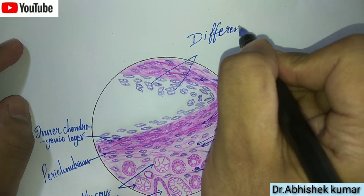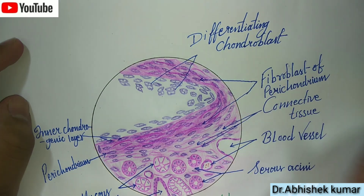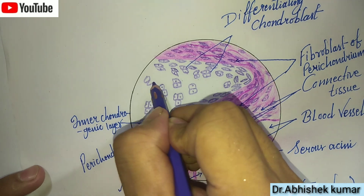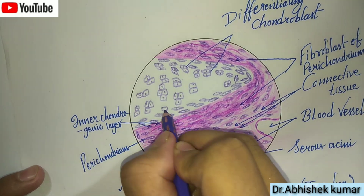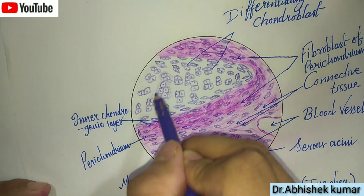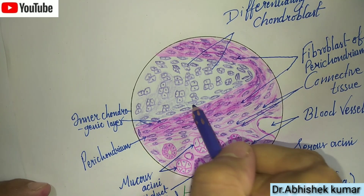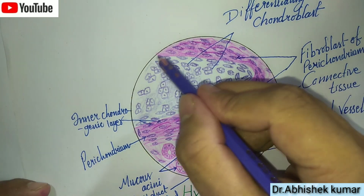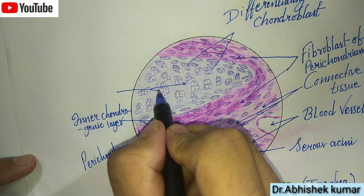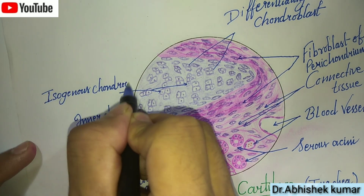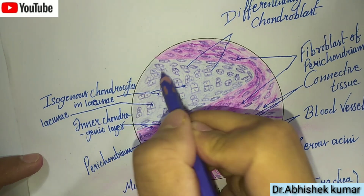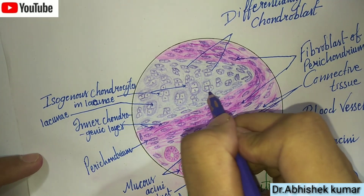This is the differentiating chondroblast. Here are the isogenous chondrocytes in the lacunae, and this one is the lacuna.